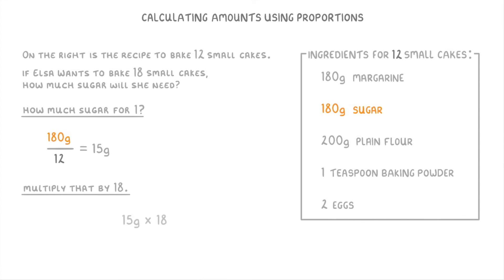And then we can multiply that 15 grams by 18 to find out that she'd need a total of 270 grams of sugar if she wants to bake 18 cakes. And remember that we could use this exact same technique for any of the other ingredients as well.